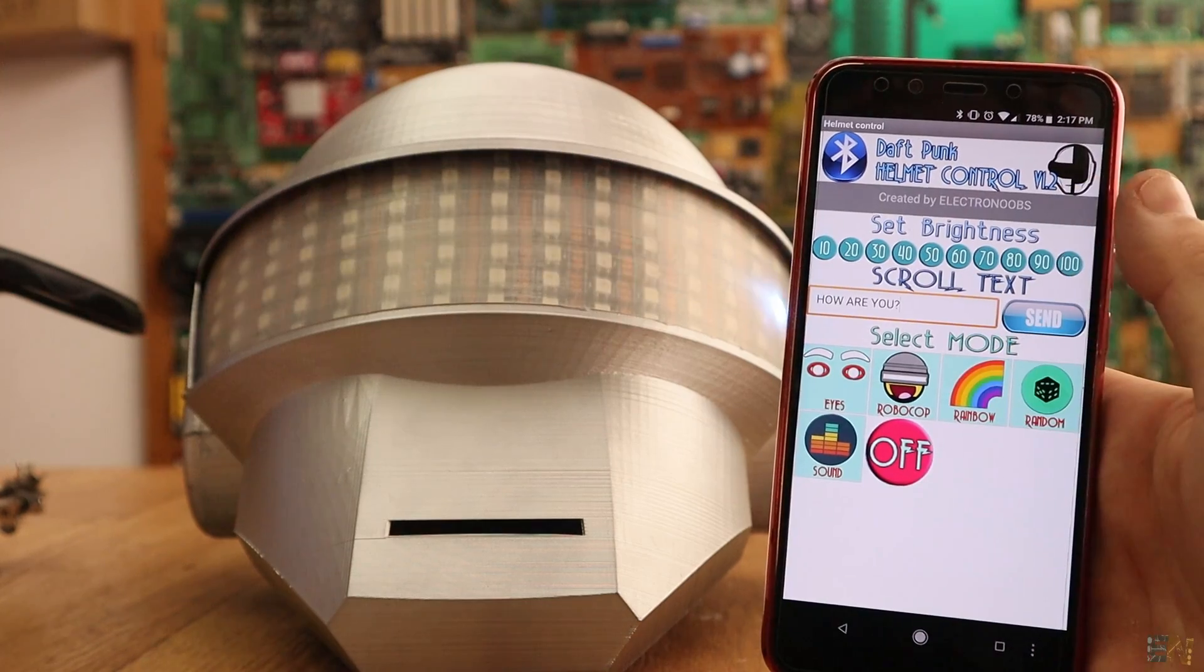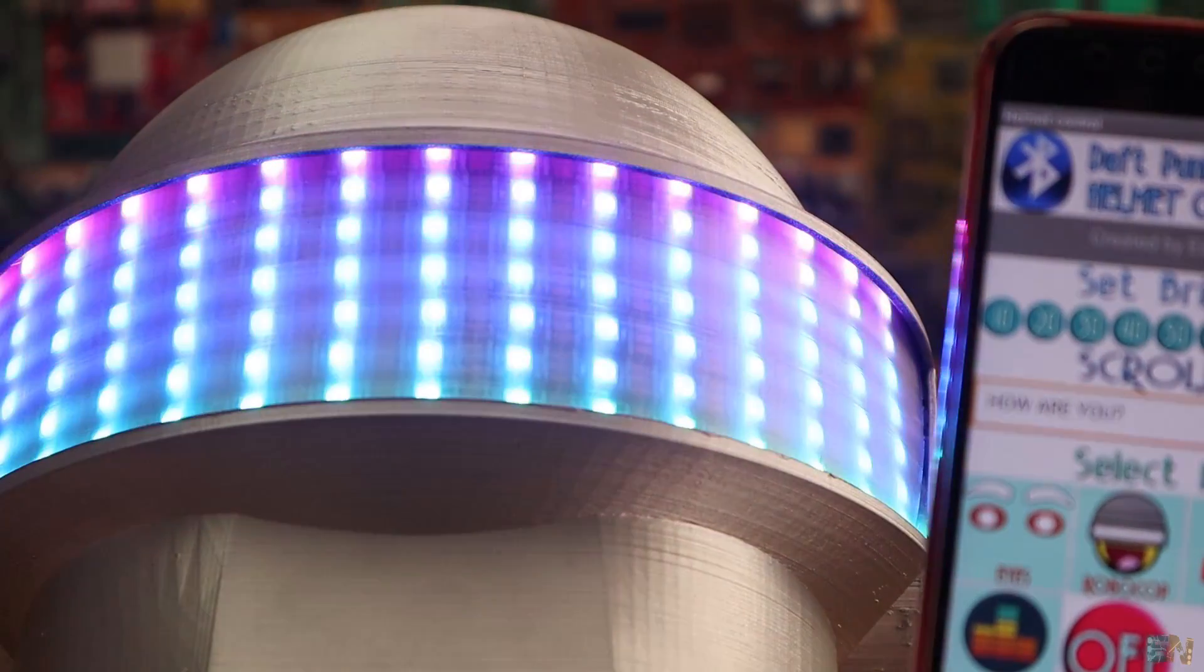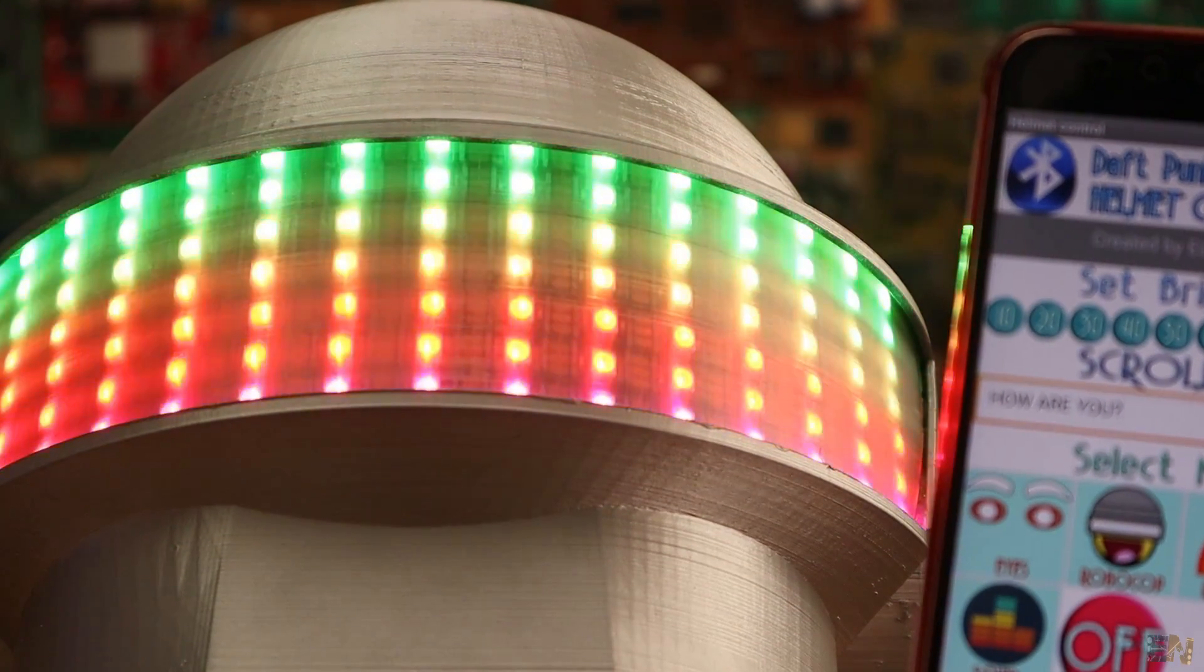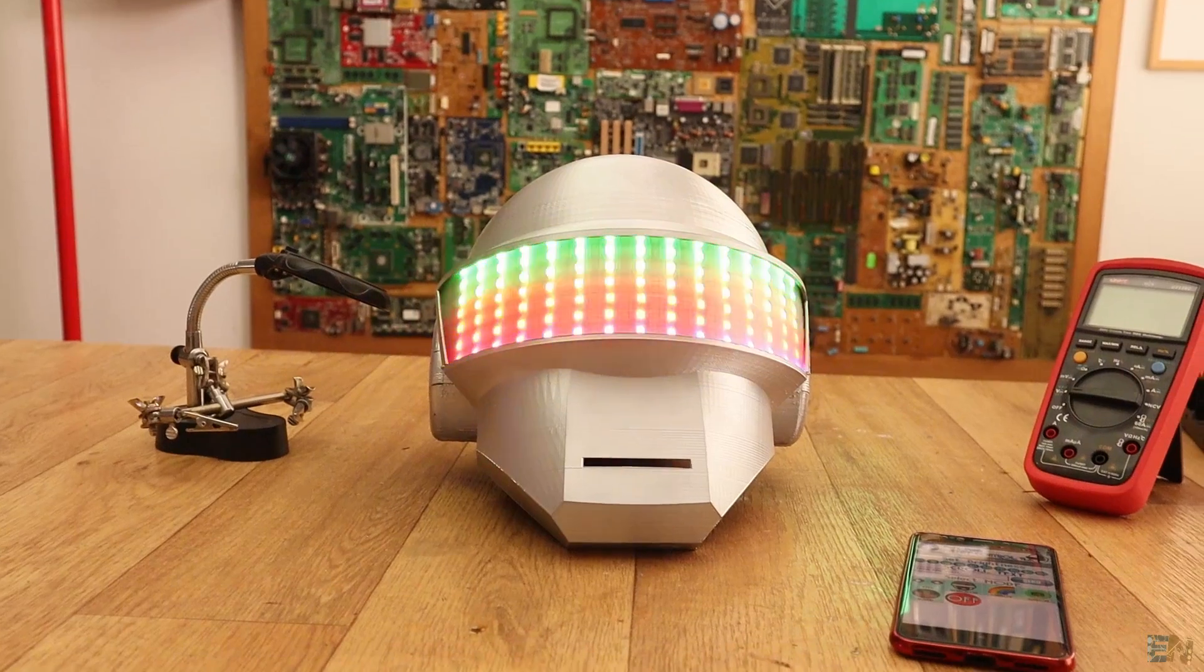Next, I hit the rainbow option and here we have all the LEDs turned on and fading from one color to the other. I think this is a very cool effect that you could give to this project. So many colors make this helmet look awesome.